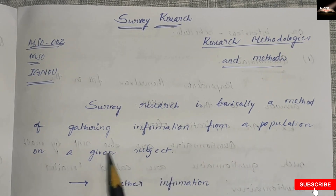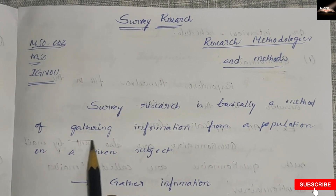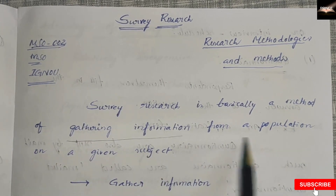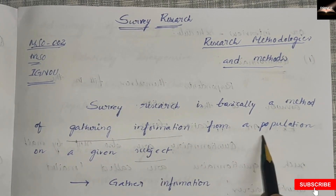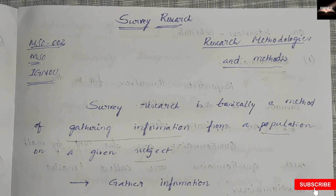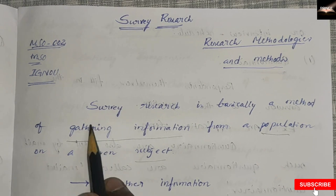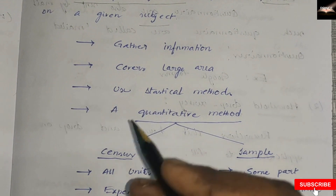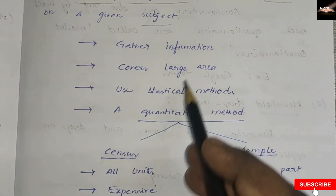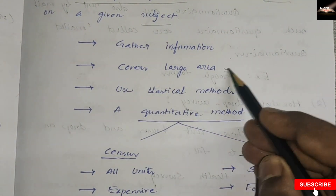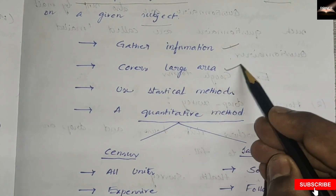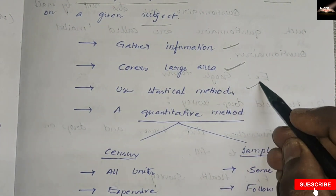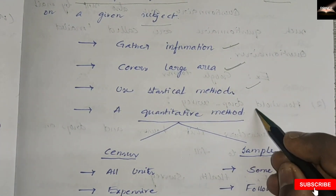Survey research is basically a method of gathering information from a population on a given subject — collecting data and analyzing. It covers a large area and uses statistical methods. It is actually a quantitative method.